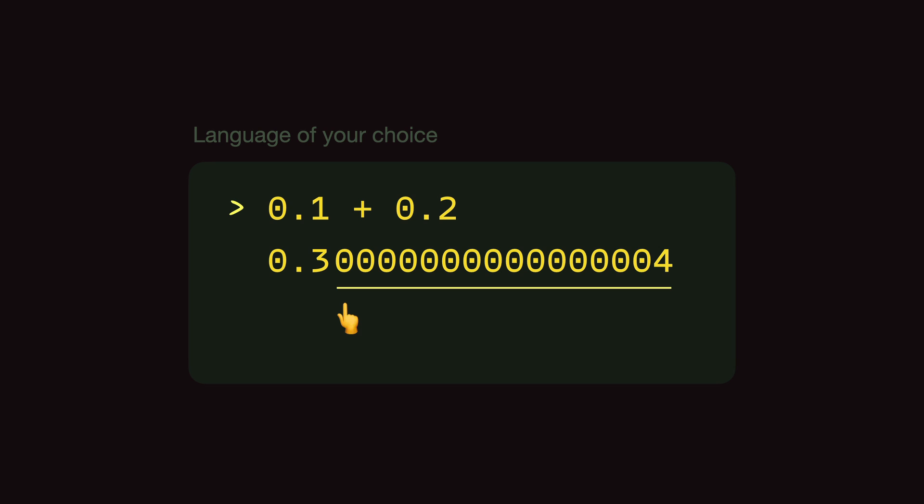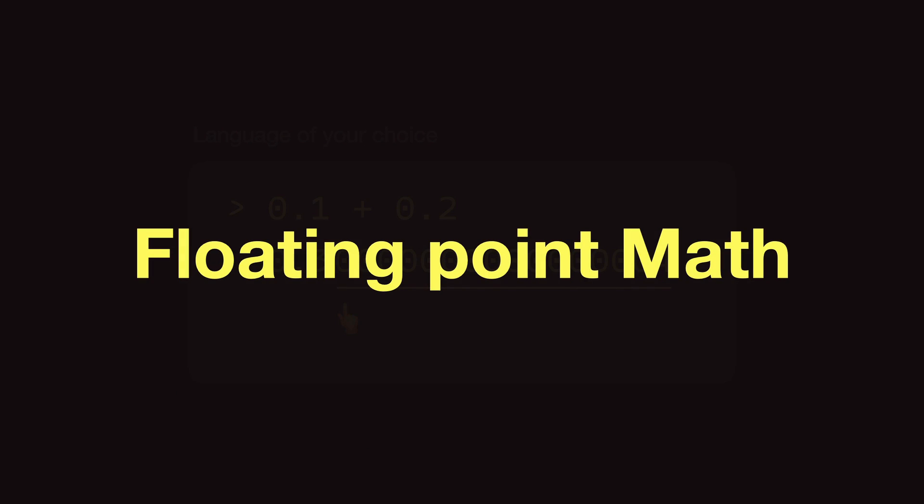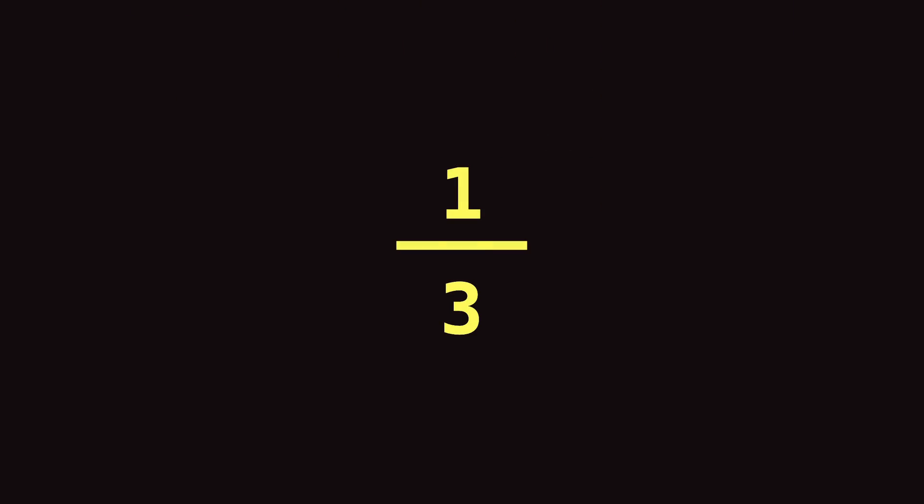This is the result of how the computer performs arithmetic operations on floating point numbers. To understand this better, let's take an example of a real-world situation and see how we humans do mathematical operations and how it is different from computers. Let's say that we have one divided by three.